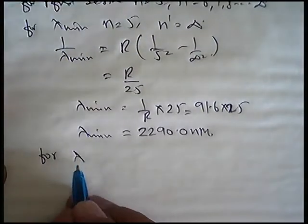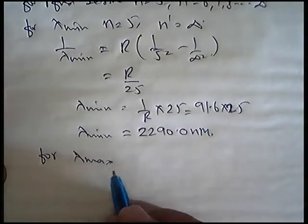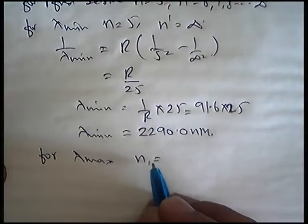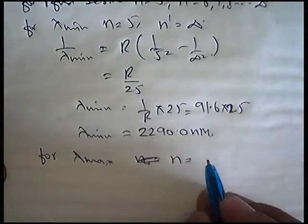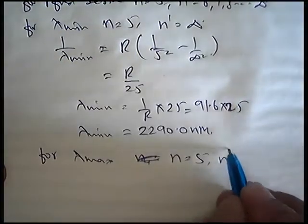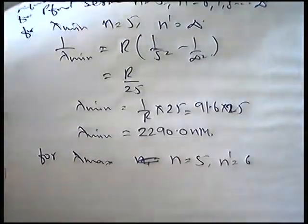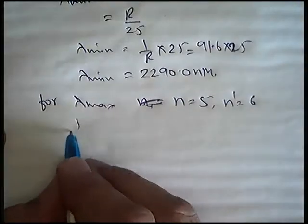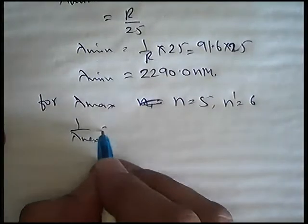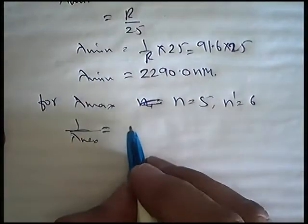Phir uske baad for lambda maximum, n equals to kitna manega? N equals 5, n dash equals 6. Aur ab, 1 by lambda maximum, iska value kitna hoga?